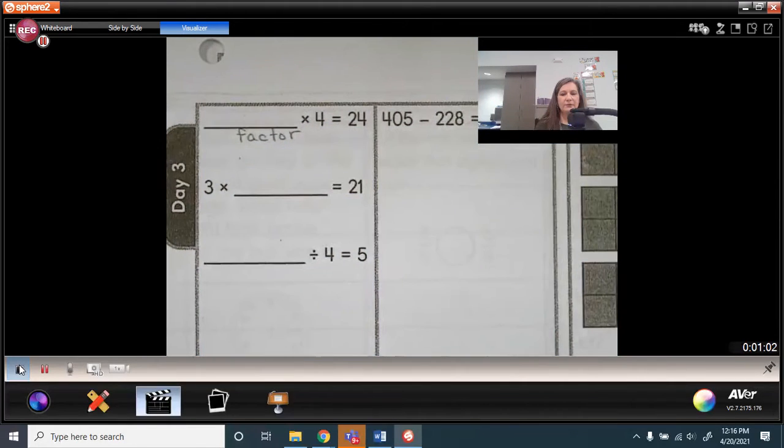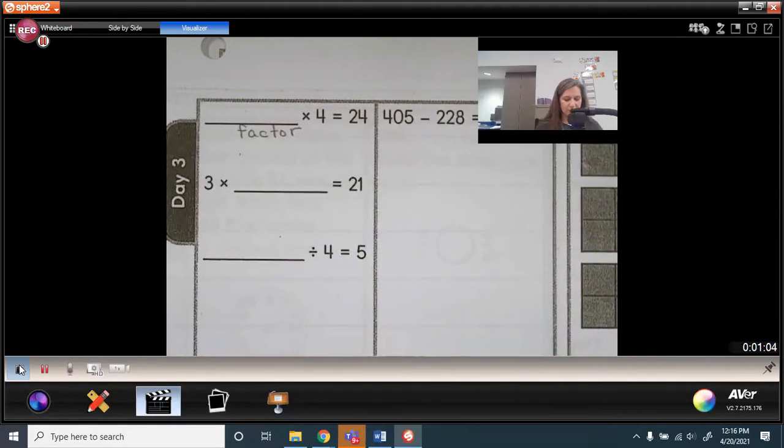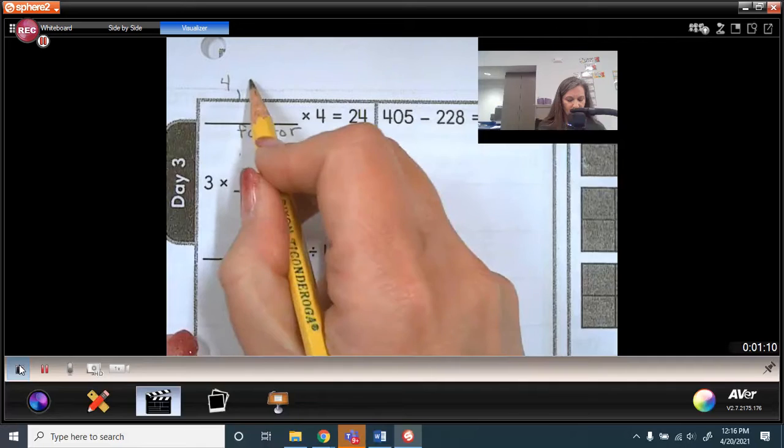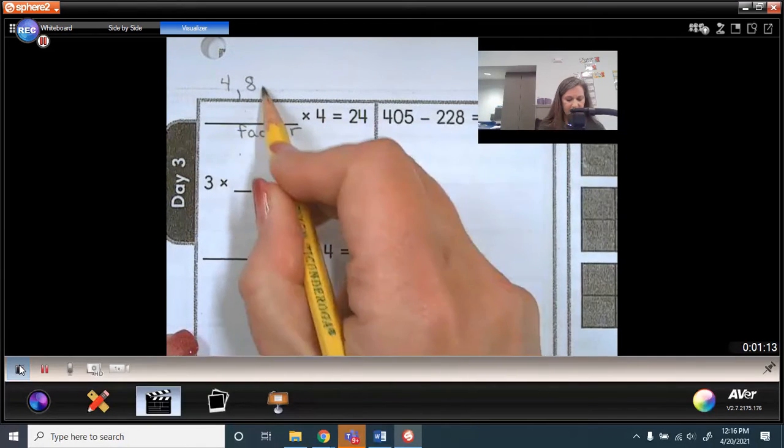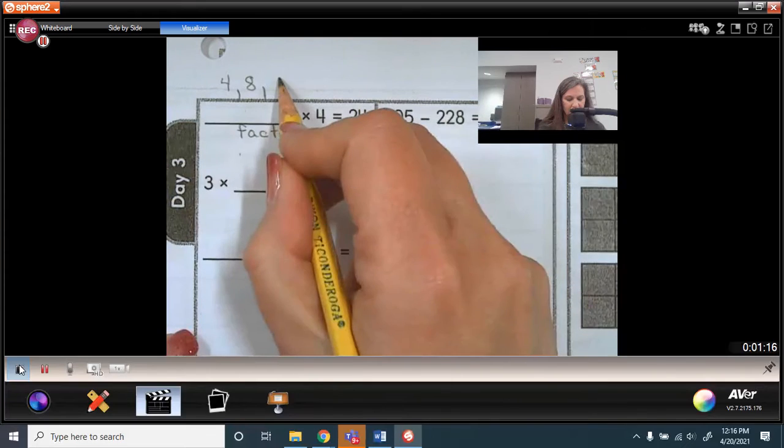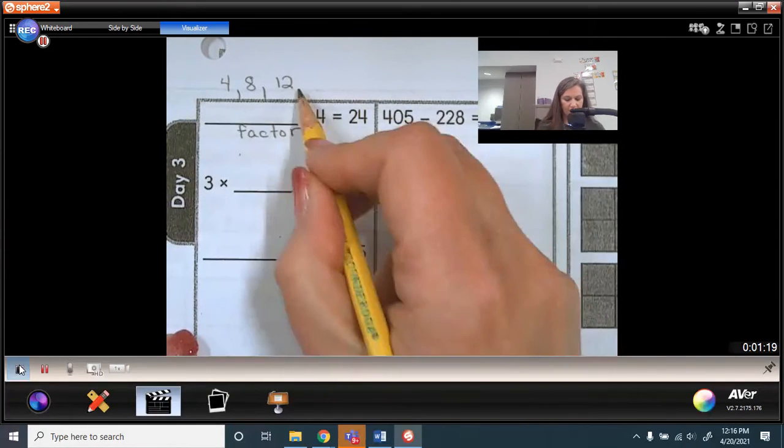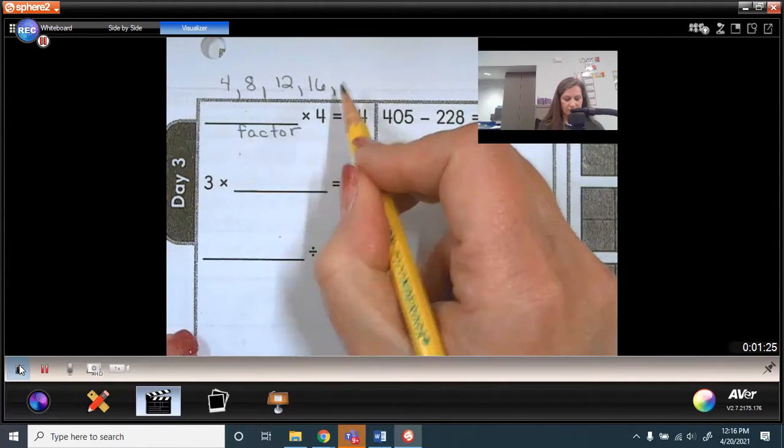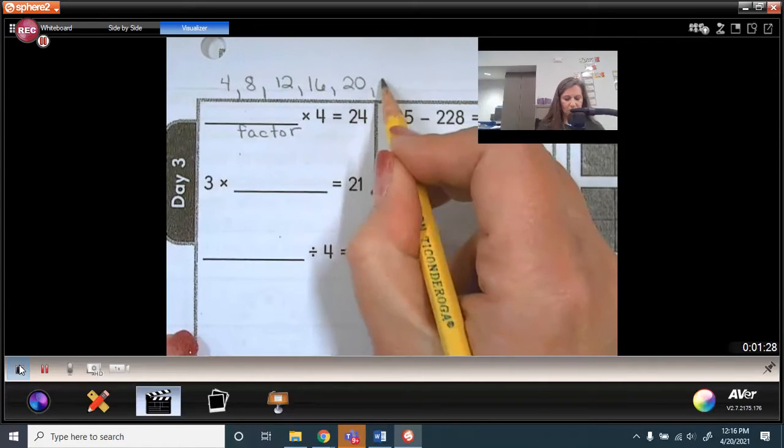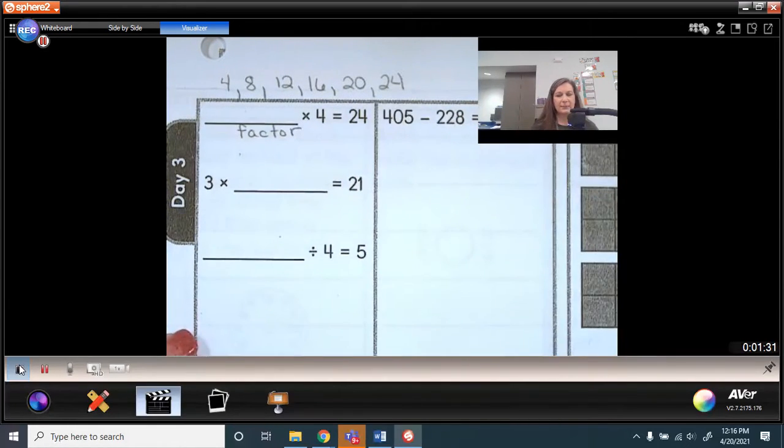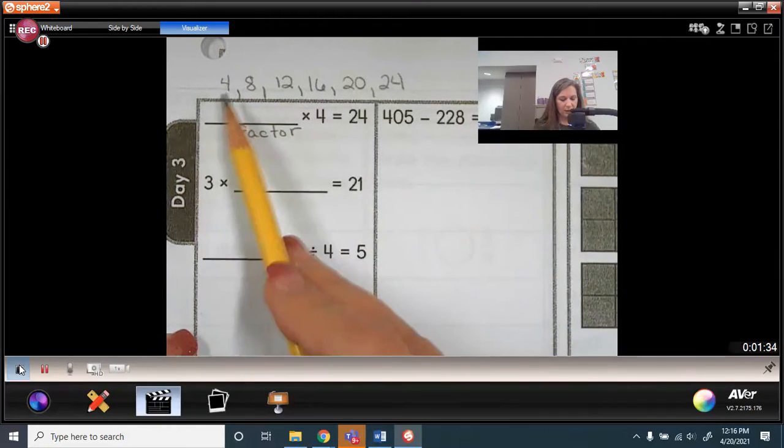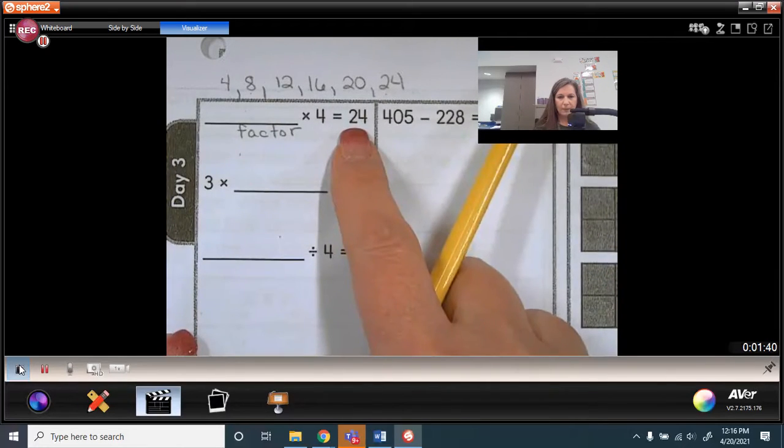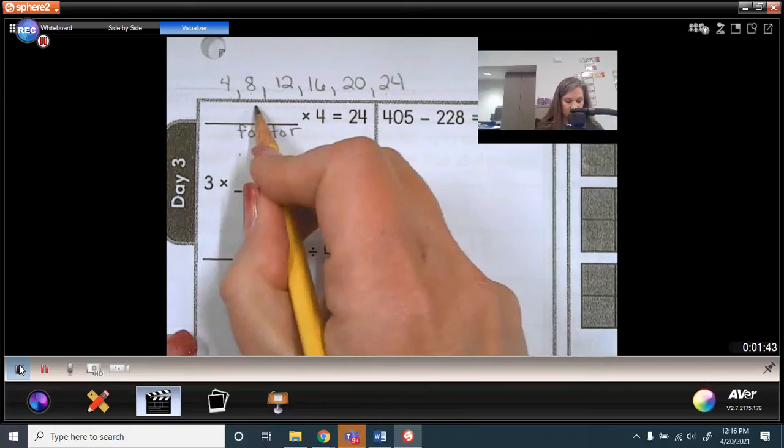I can do a couple of different things. I could take groups of 4 and count by 4. So 4, and 4 more makes 8, and 4 more makes 12, and 4 more makes 16. Add 4 more, that's 20, and 4 more makes 24. So when I was skip counting by multiples of 4, how many groups of 4 did it take for me to get to my total? Right, 6 groups of 4.